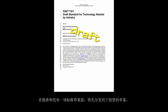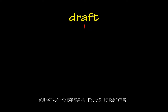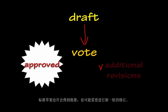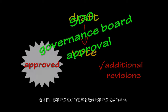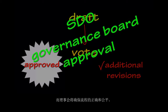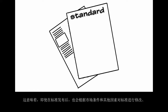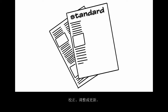Before a draft standard can be approved and published, it is sent out for a vote. Based on the percentage of balloters and the approval rates, the draft standard may be approved, or sent around again for additional revisions. Ultimate approval of the finished standard is typically granted by the SDO's governance boards, which ensure that the process was followed correctly and fairly. Standards are living documents — even after they are published, they may be modified, corrected, adjusted, or updated based on market conditions and other factors.